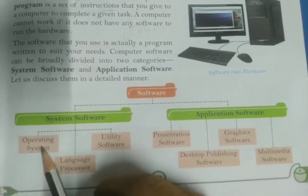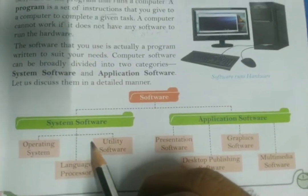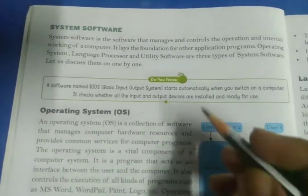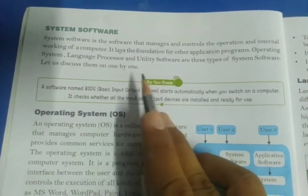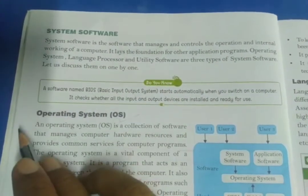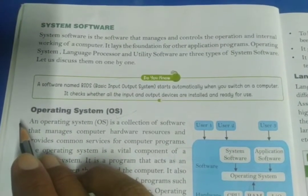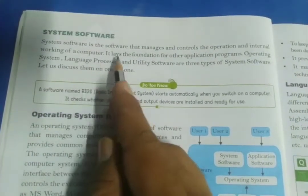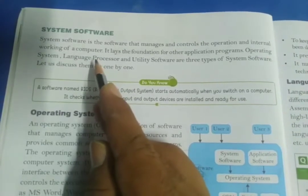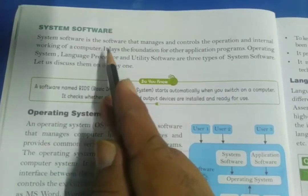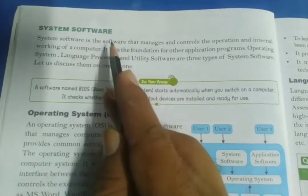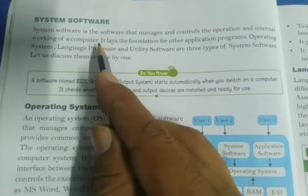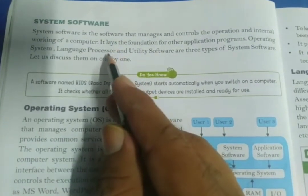Now let us discuss about system software. There are two types of software: application software and system software. System software is responsible for managing all the internal activities of a computer — each and every operation is under system software. System software provides a space for other software to run upon.